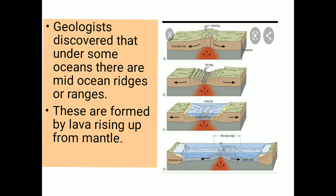Geologists discovered that under some oceans like the Pacific, Indian, and Atlantic oceans, there are mid-ocean ridges or ranges — some sort of mountain-like structures. These are formed by lava rising up from the mantle. The top layer is crust and the second layer is mantle. From the mantle this lava comes out and gradually forms different types of valleys — those are the rift valleys. Gradual frequent eruptions take place, and because of that the ocean floor slowly spreads. This is regarding the seafloor spreading.